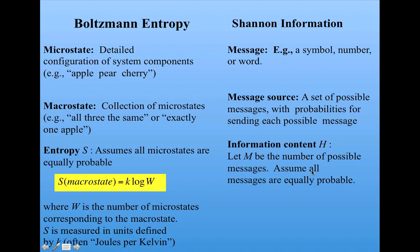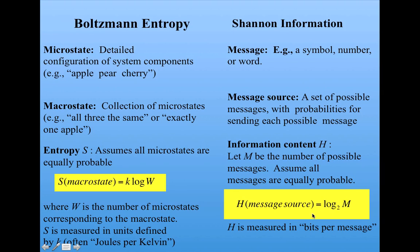Now we can define h, the Shannon information content of a message source, as being equal to log base 2 of m, that is log base 2 of the number of messages. The log base 2 allows us to measure information content in bits per message.